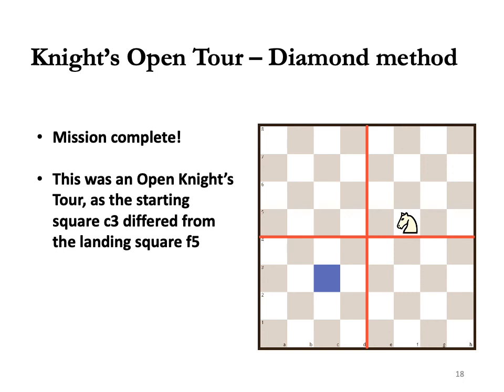I will leave you with a question. The starting square c3 is a dark square, while the landing square f5 is a light square. Can you figure out why all knight's tours on an 8x8 board that begin on a dark square must always end on a light square?